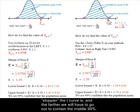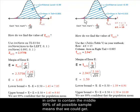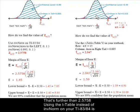The smaller the sample size is, the sloppier the T curve is, and the farther we have to go out to contain the middle 99%. In our case here, we need to go 2.947 standard errors above and below the population mean in order to contain the middle 99% of all possible sample means that we could get. That's further than 2.5758.